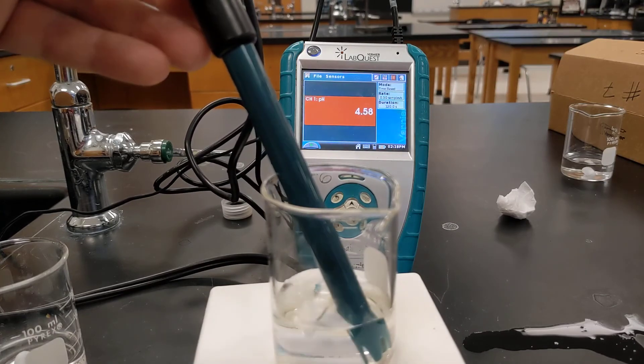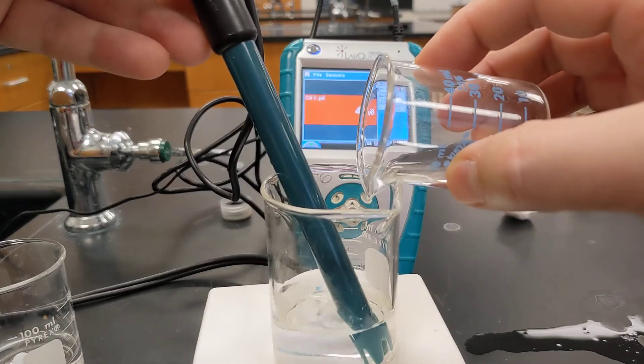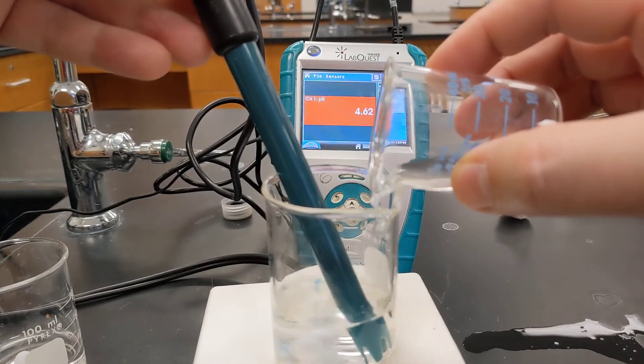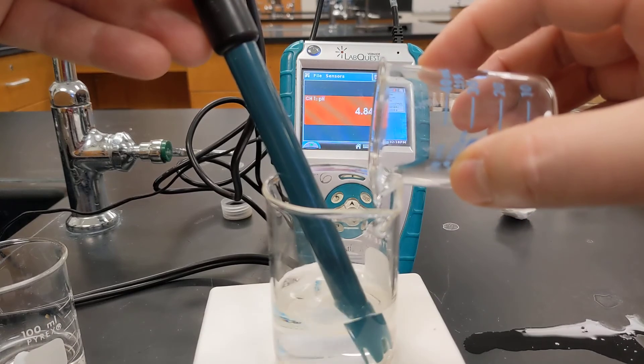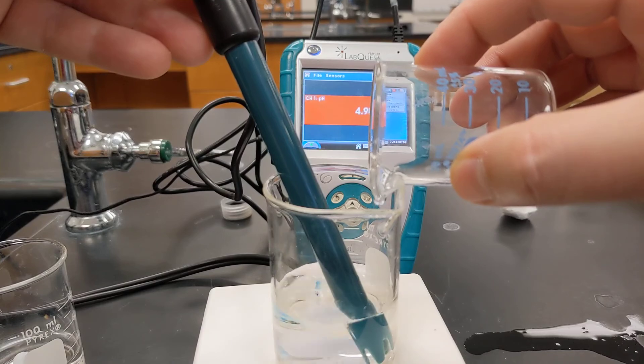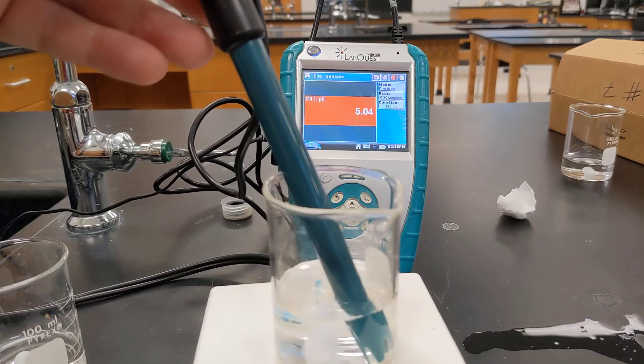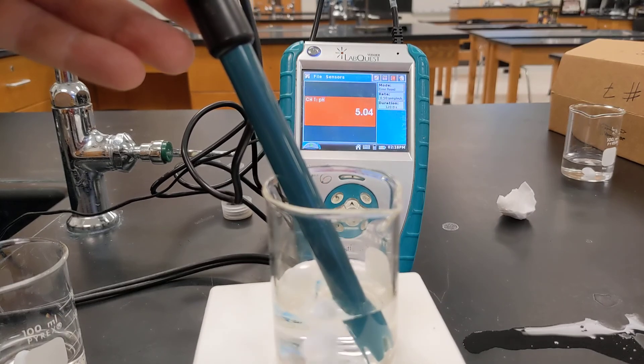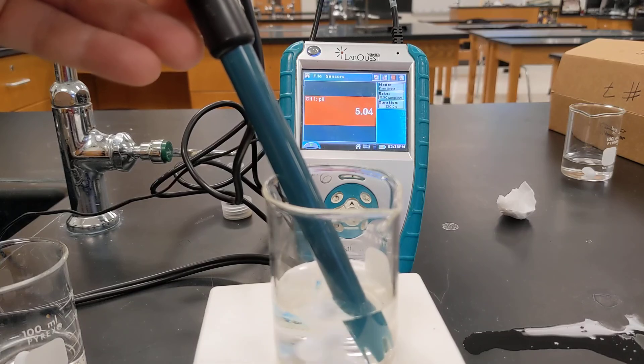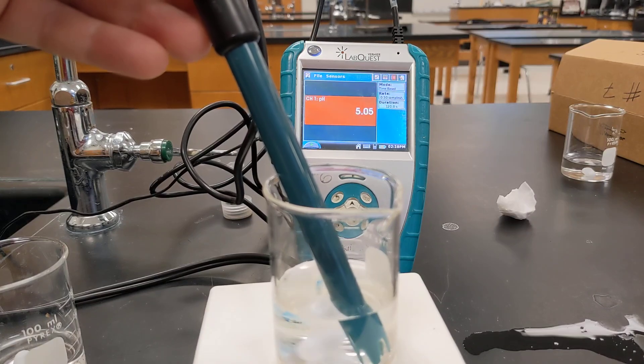Similarly, if I take the base and I start adding it, I'll just pour it in instead of using the dropper. You can see the base brings the pH up, but I'm adding a whole lot of it, and the pH did not change by a huge amount. So that's the benefit of buffer solutions is that they resist changes in pH. So there you go.